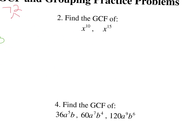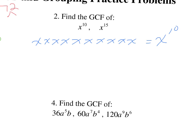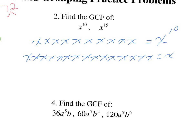Let's try it on number 2 — now we have variables. You can write these all out if you want to. But if you remember the shortcut, the GCF is just to take the variable with the smallest of the exponents. So the GCF here is X to the 10.